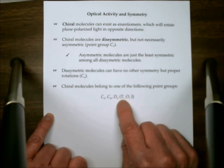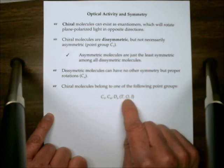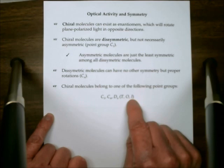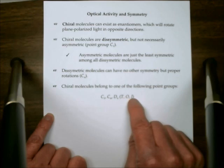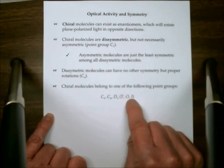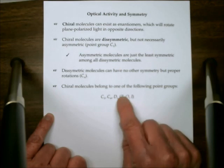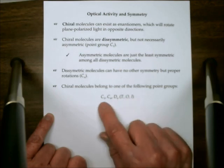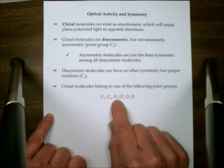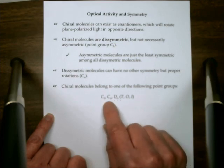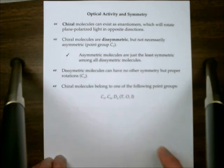Groups composed only of proper rotations include C1 (asymmetric), Cn (totally rotational), and Dn — as we saw with D3. These are the symmetries that allow chiral character and optical activity. In principle, T, O, and I (the purely rotational subgroups of Td, Oh, and Ih) could also be optically active, but no real molecules with those symmetries are known. So for practical purposes, real optically active molecules belong to C1, Cn, or Dn families.